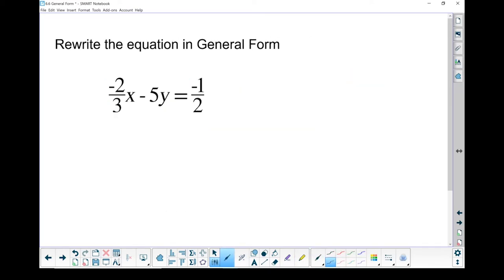Let's run through another, rewriting this one into general form. Once again, our general form is ax plus by plus c equals zero. This one has a couple of problems. It's got fractions. That keeps it from being general form.